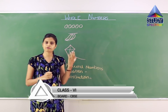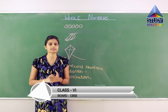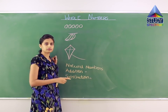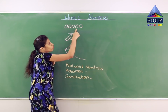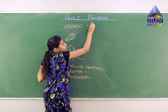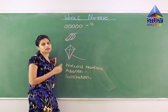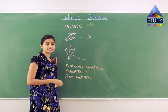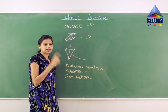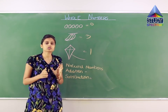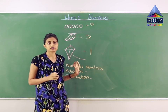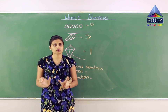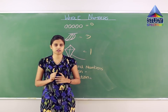Before understanding whole numbers, let us understand what natural numbers are. Can you see the oranges? Let us count them — 1, 2, 3, 4, and 5. How many bananas are there? 1, 2, and 3. And a kite — how many kites are there? Just 1. All the things drawn here were countable, so these countable numbers are called natural numbers.